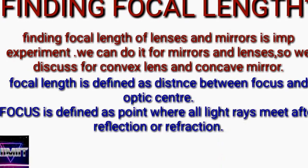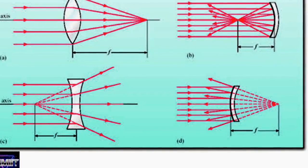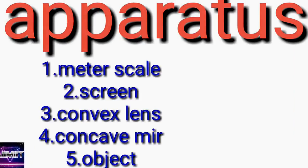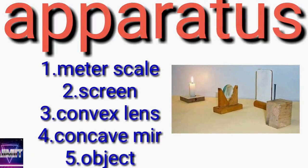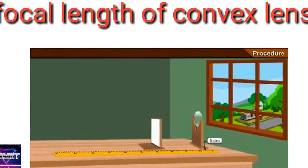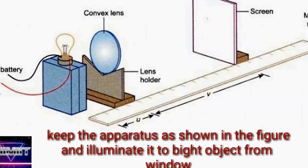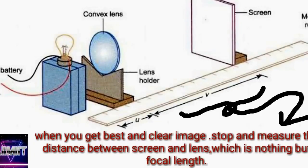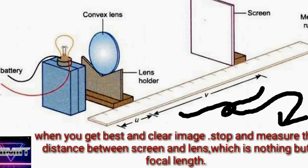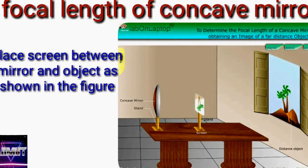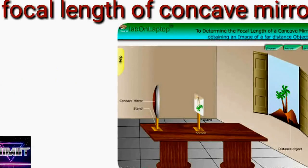Coming to the next experiment — finding the focal length. Focus is a point where all the light rays meet after reflection or refraction. We find the focal length of a convex lens and a concave mirror in our 10th CBSE board examination. The apparatus required are: mirror, scale, screen, convex lens, concave mirror, and an object. Keep the lens between the screen and the object. Whenever you get a sharp image on the screen, find the distance between the lens and the screen — that gives you the focal length. In the mirror experiment, the distance between the screen and the mirror gives the focal length.